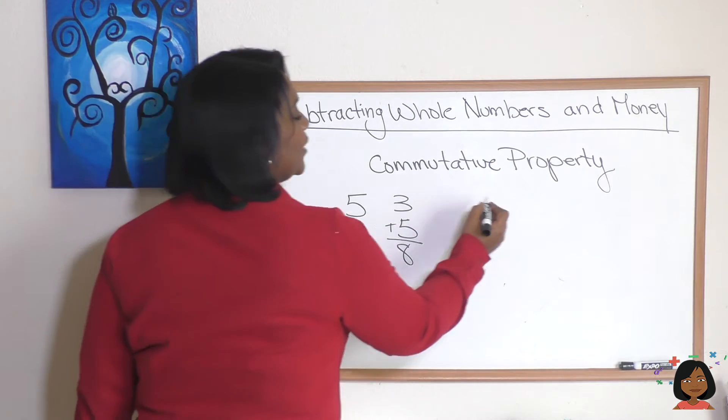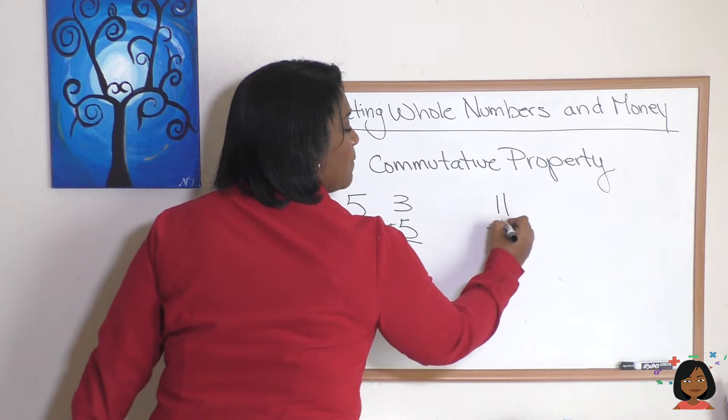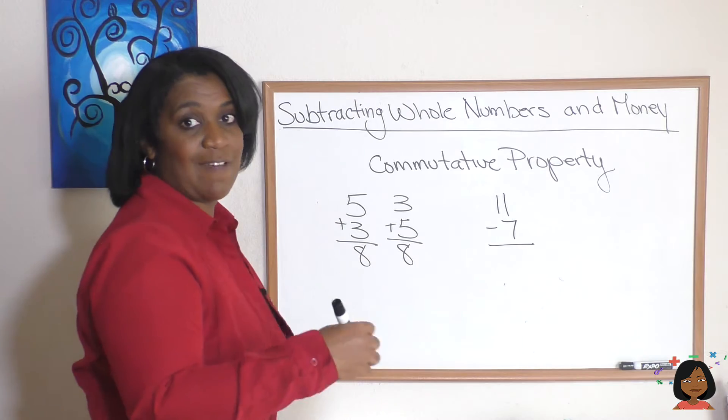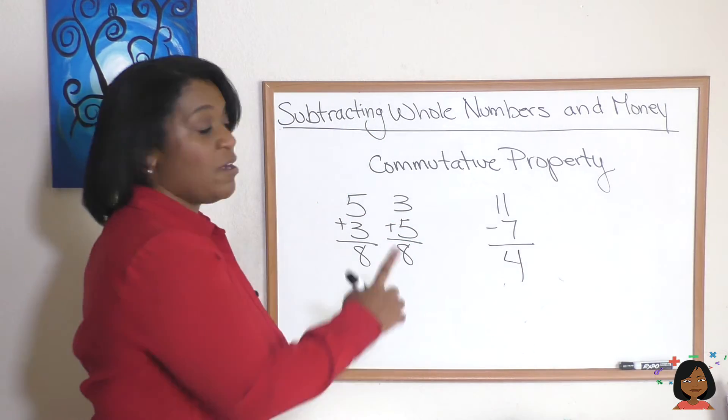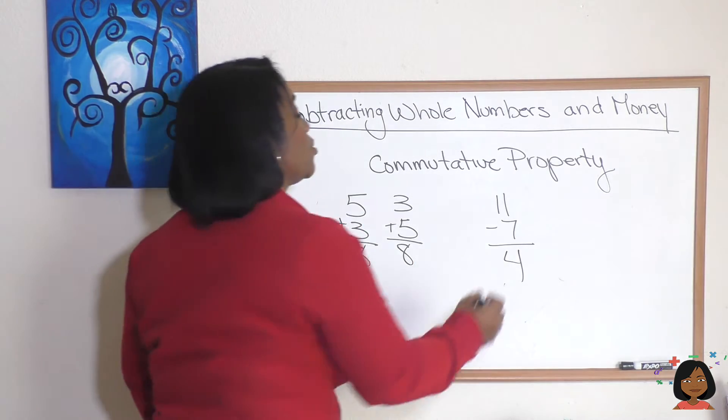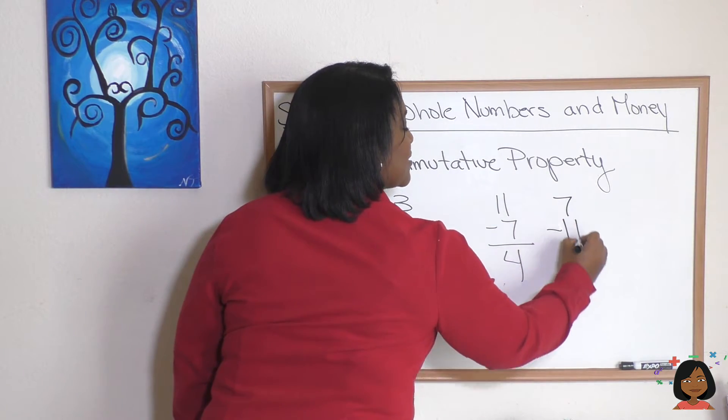Let's try the same thing that we did with addition over here with subtraction. So we're gonna do seven minus eleven. Well seven minus eleven, we're not gonna get four, we're actually gonna get a negative number which we're not talking about that right now.